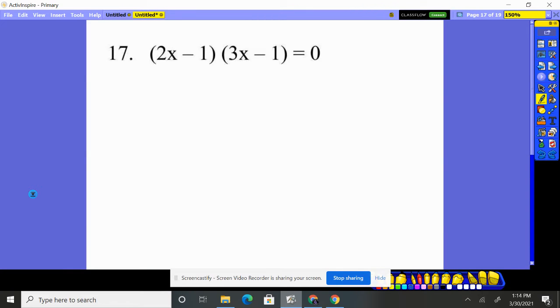17. 2x minus 1 times the quantity 3x minus 1 gives me 0.